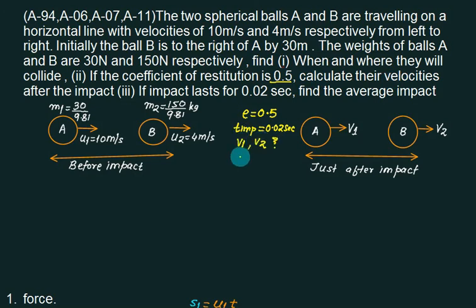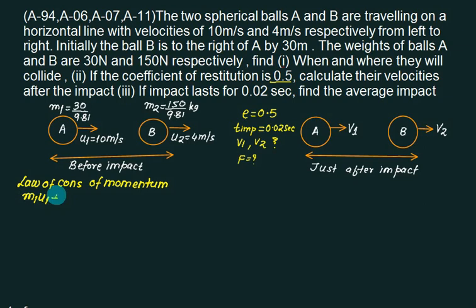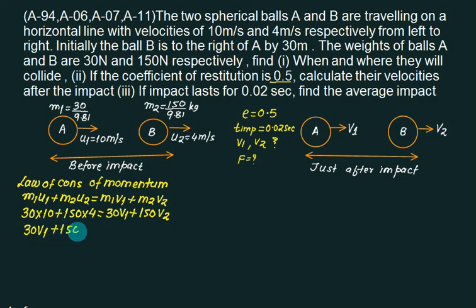We want to find out their velocity after impact. So we want to find out V1 and V2. First of all I will apply law of conservation of momentum. According to law of conservation of momentum, initial momentum M1*U1 plus M2*U2 must equal M1*V1 plus M2*V2. All the mass terms are having 9.81 common, so there is no point in writing here because it gets cancelled on both sides. 30 into 10, 150 into 4, 30*V1, 150*V2. So my answer is 30*V1 plus 150*V2. This one is 300 and this one is 600. Is it 900? Equation 1.